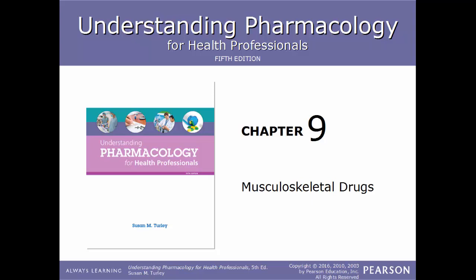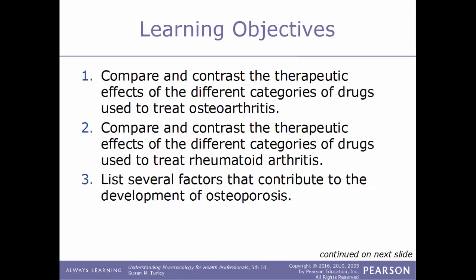Hello and welcome back to our video series on pharmacology. In this video we will continue our course on chapter number nine: musculoskeletal drugs. Learning objectives for this chapter: compare and contrast the therapeutic effects of different categories of drugs used to treat osteoarthritis, and compare and contrast the therapeutic effects of different categories of drugs used to treat rheumatoid arthritis.